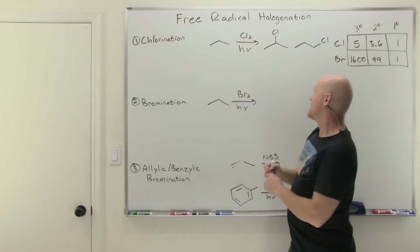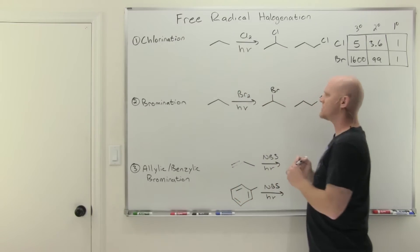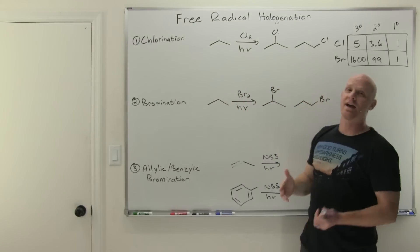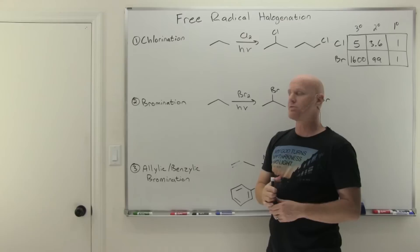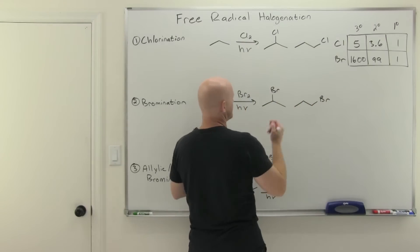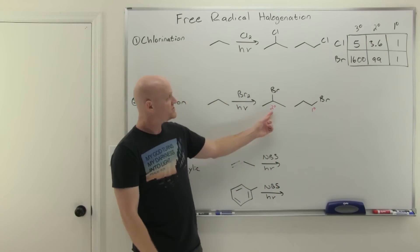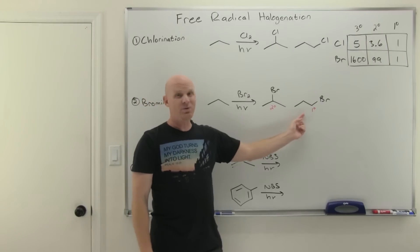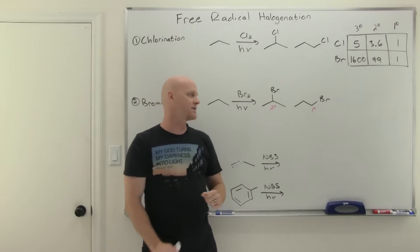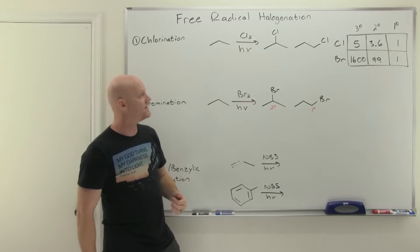Bromination works exactly the same way, but the result is a little different. Bromination is much more selective than chlorination. With chlorination, you can expect to get a fair amount of all possible products. But with bromination, looking at bromination on a secondary carbon versus a primary carbon, you are overwhelmingly going to get the secondary product. Bromination is a nice reaction if you're trying to selectively get a single product — much better than chlorination, which is way less selective, as we'll discuss in the mechanism.